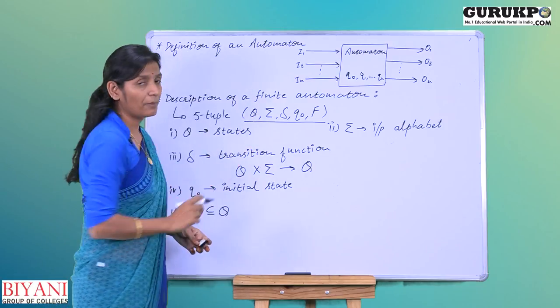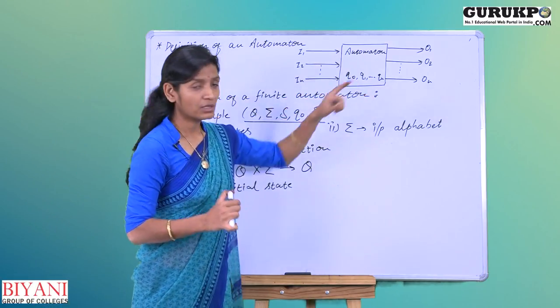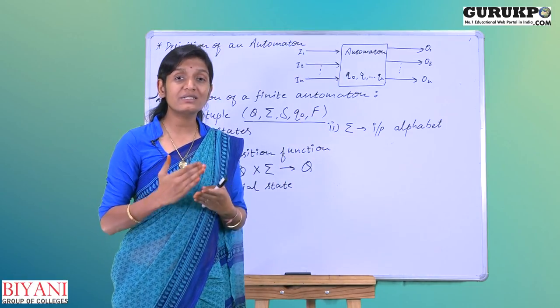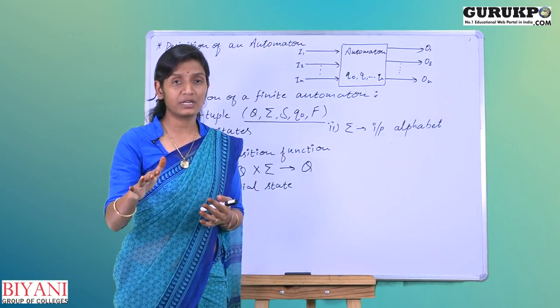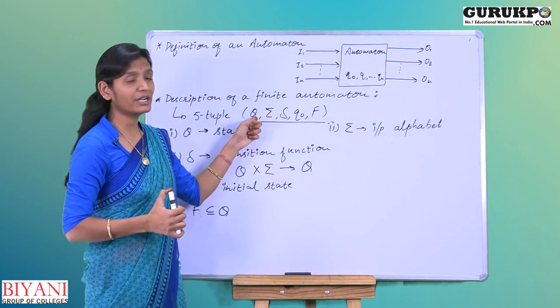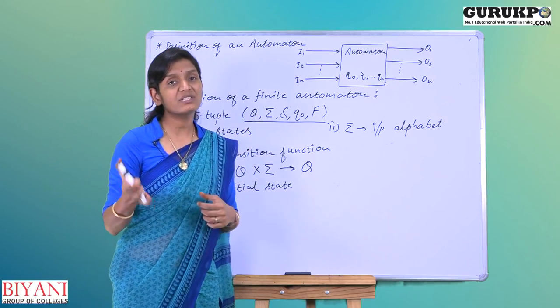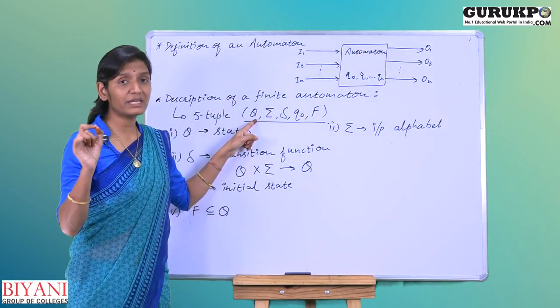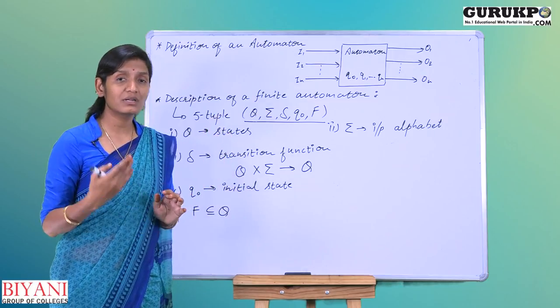First is capital Q, which contains all the states from Q naught to Q n, in which the automata can transit. From the very initial state to the final state will all be considered in the set of Q. Q is a non-empty set of states in which your automata can transit.